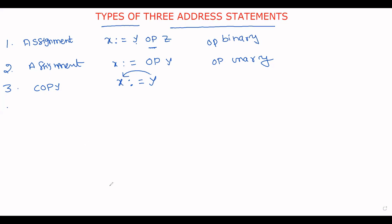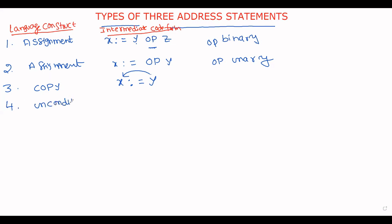These are called language constructs — terms that are used in the language. This is the intermediate code form in terms of three address statements.